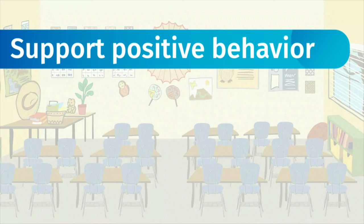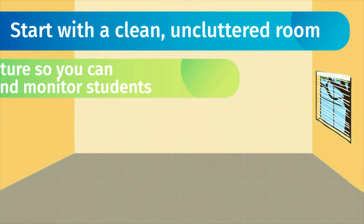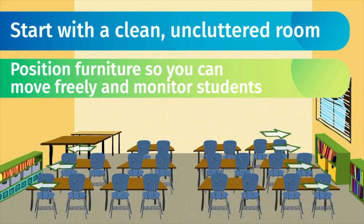Organize the physical classroom. You can support positive behavior in learning by organizing classroom furniture, materials, and activities. To set up the classroom's physical environment, start with a clean, uncluttered room. Then, position desks, chairs, and bookshelves so that you're able to move freely and monitor students.